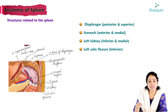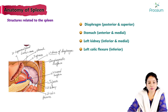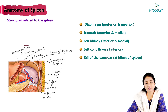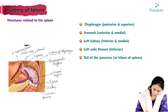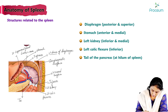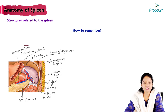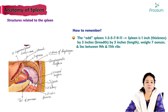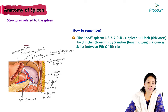The left colic flexure is otherwise called the splenic flexure because of this relationship. The spleen is also related to the tail of the pancreas at the splenic hilum. A useful mnemonic uses odd numbers 1, 3, 5, 7, 9, 11: the spleen is 1 inch thick, 3 inches in breadth, 5 inches in length, weighs about 7 ounces, and lies between the 9th and 11th ribs.